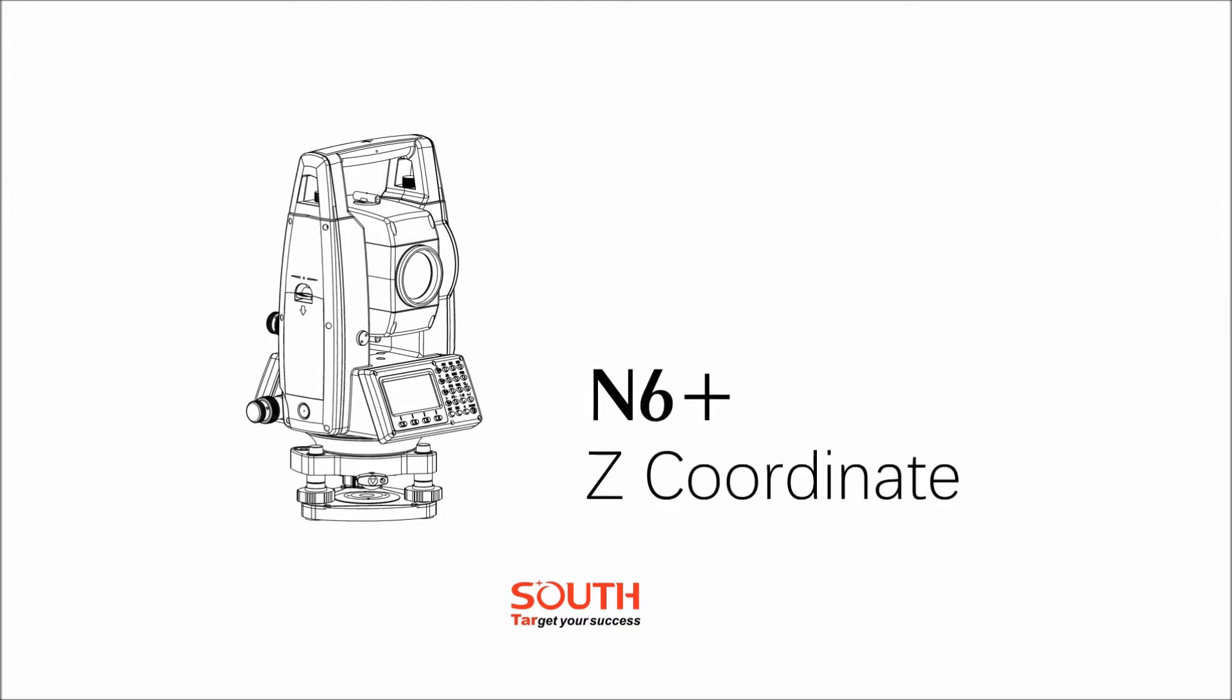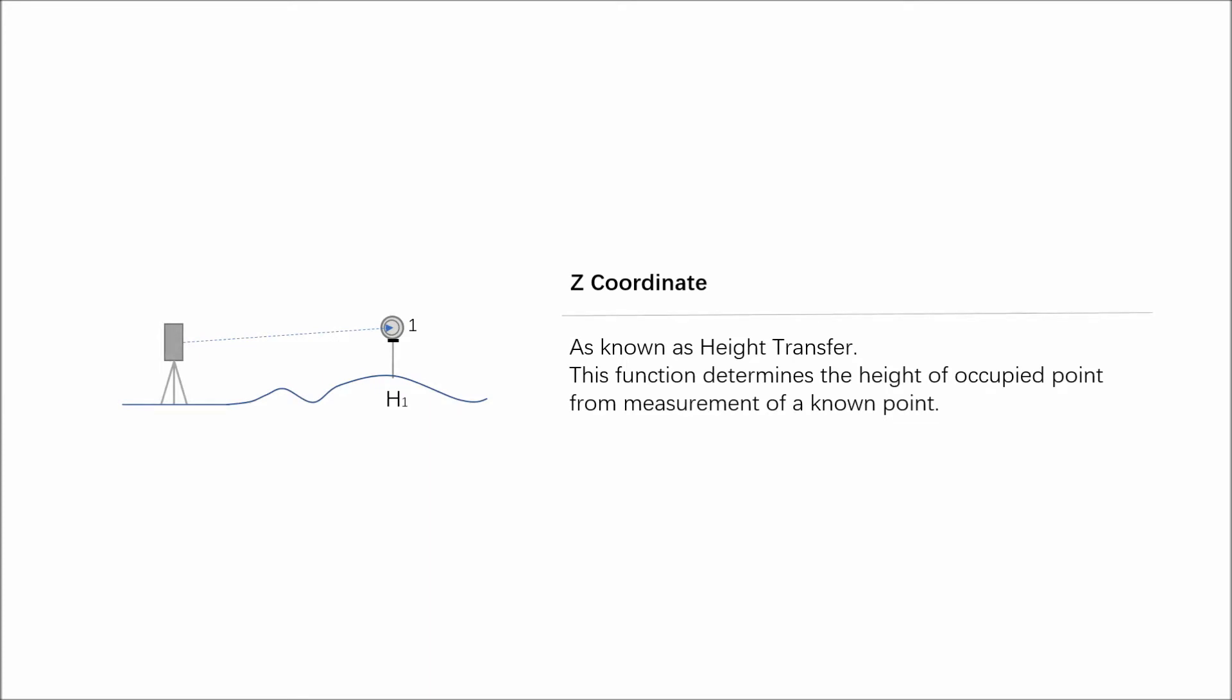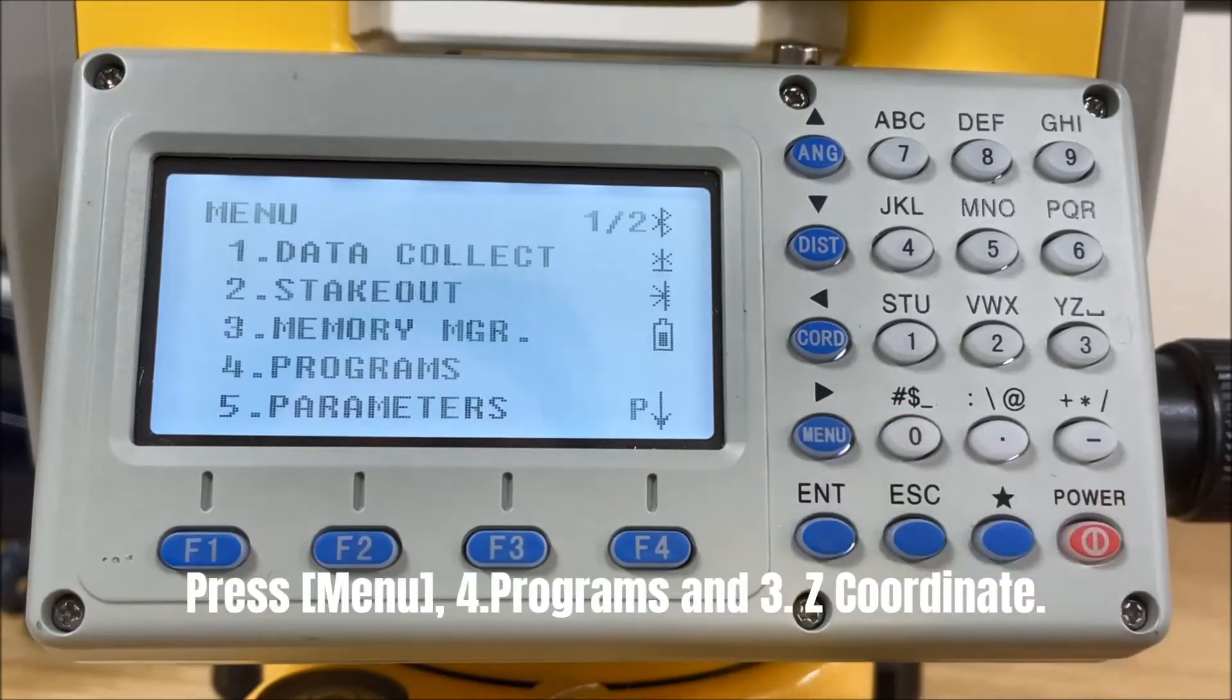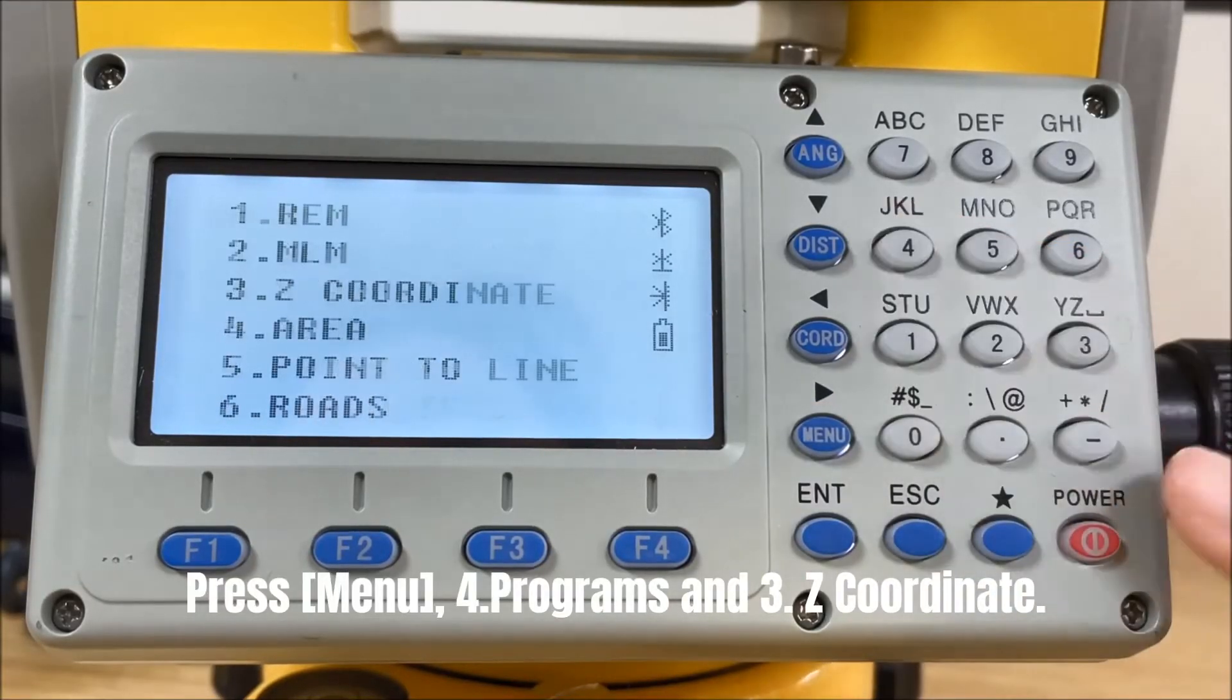Z-coordinate, also known as height transfer. This function determines the height of the occupied point from measurement of a known point. Press Menu, Programs, and z-coordinate.